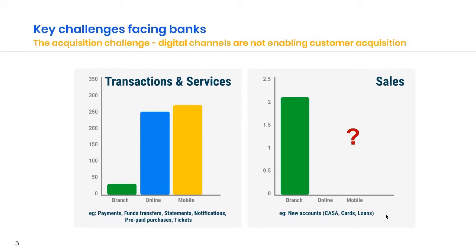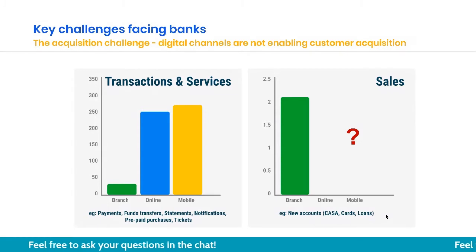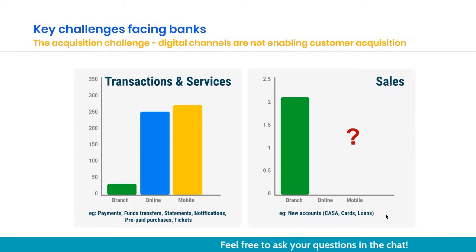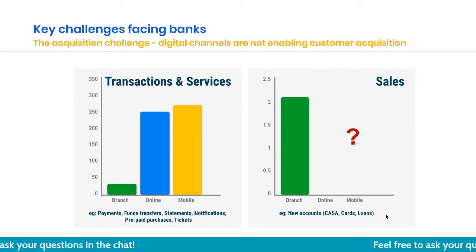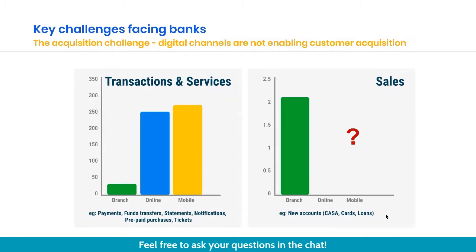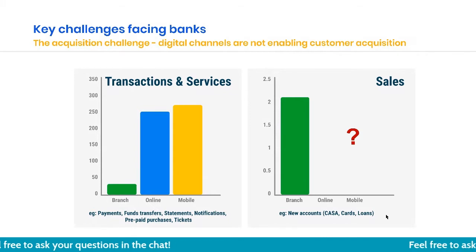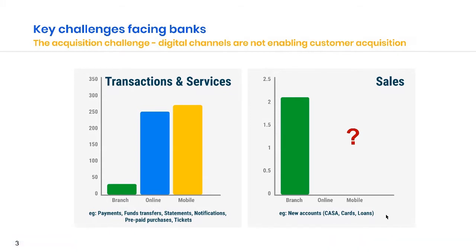In most established banks, their channels — branch, mobile, internet — are largely used for transaction services. People make payments, people make inquiries, but they are not really used for customer acquisition or new customer onboarding, which the chart on the right-hand side shows. For the more established banks, branch and paper still seem to be quite a common form of customer onboarding. The question that comes with open banking is: how do we actually change this model to allow better customer acquisition through digital channels?